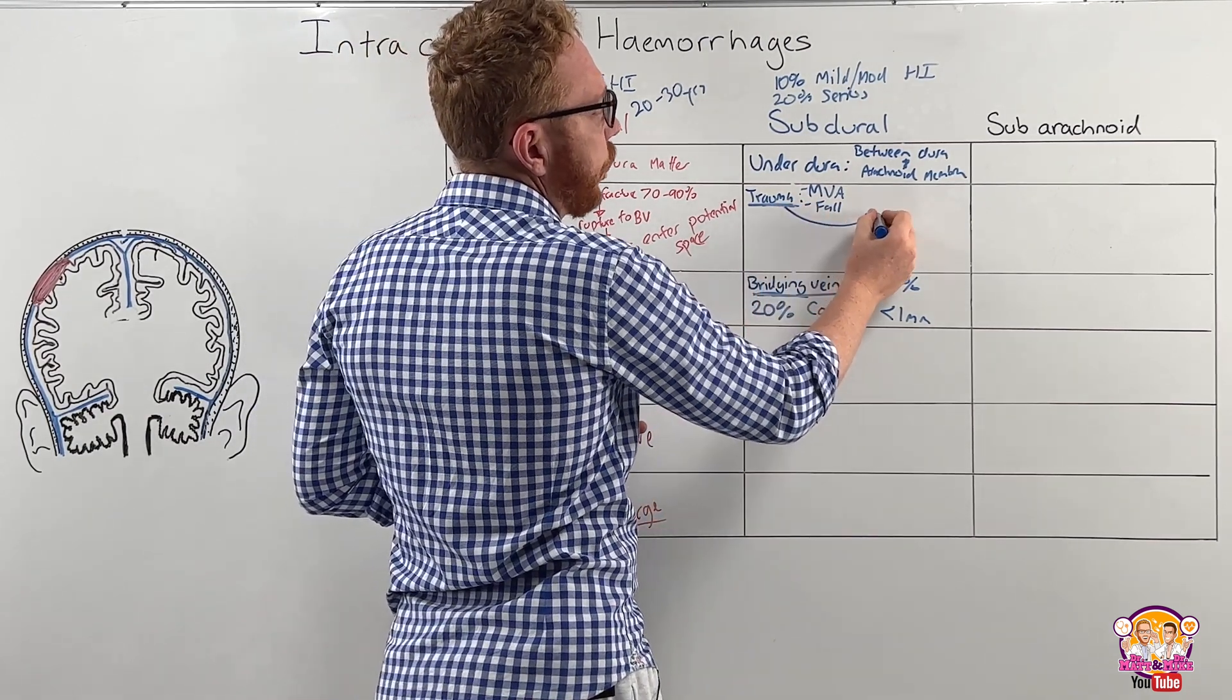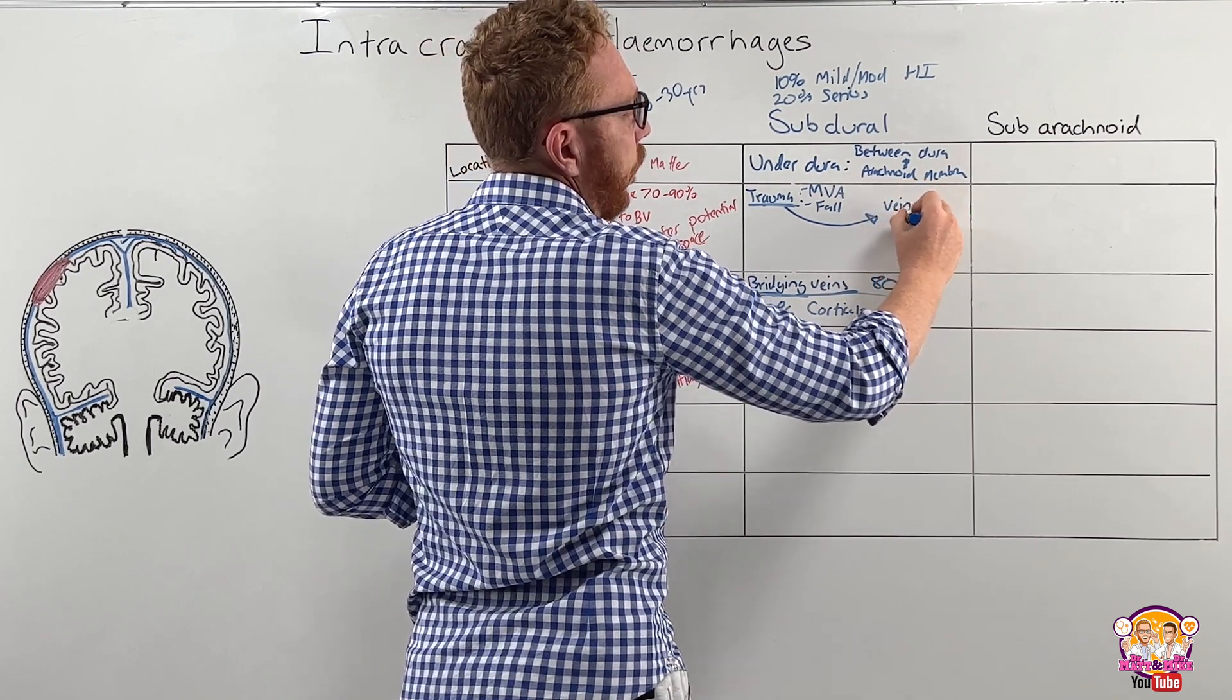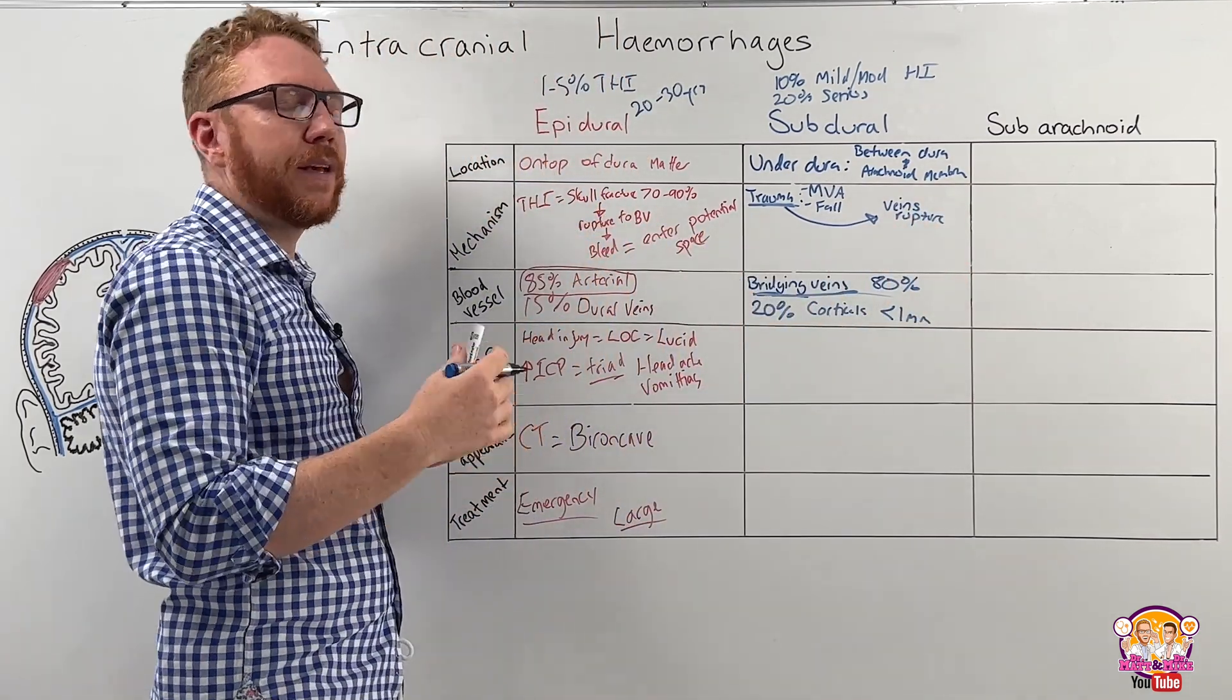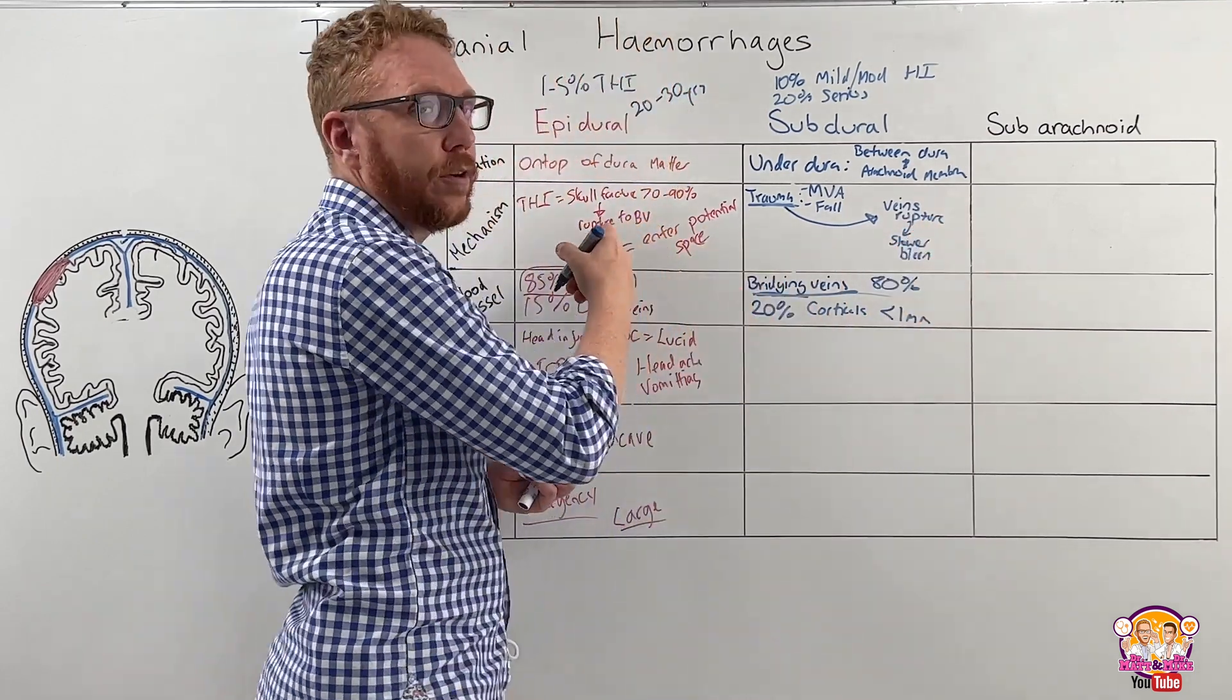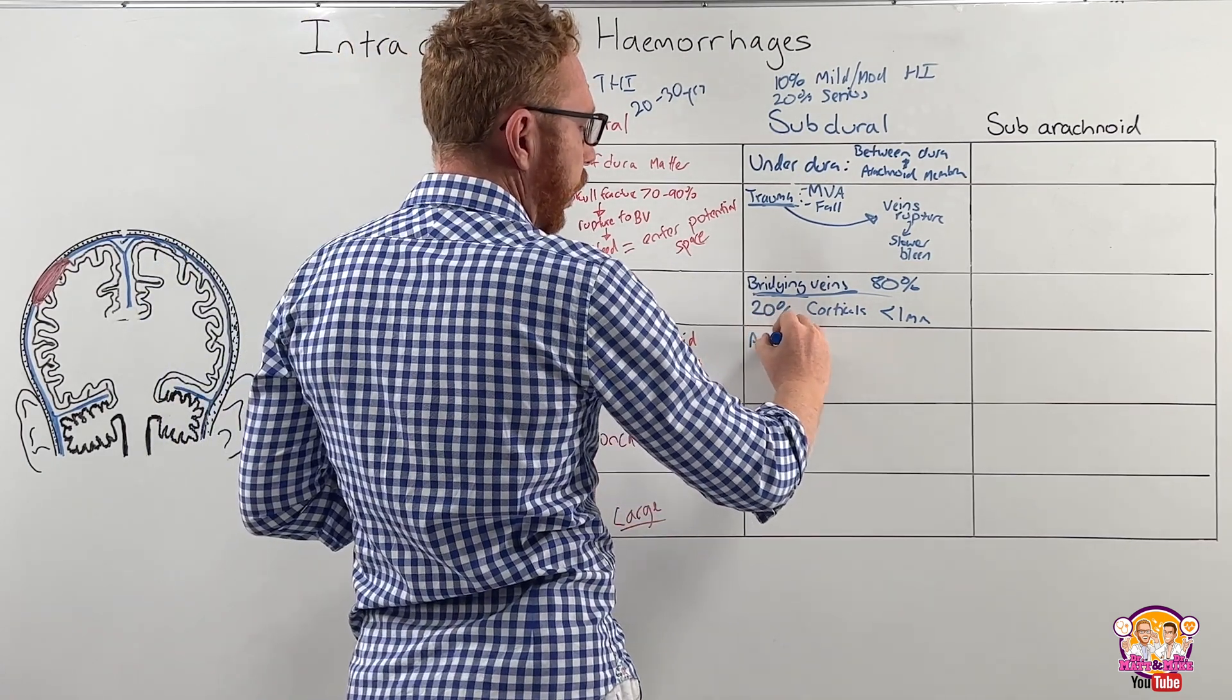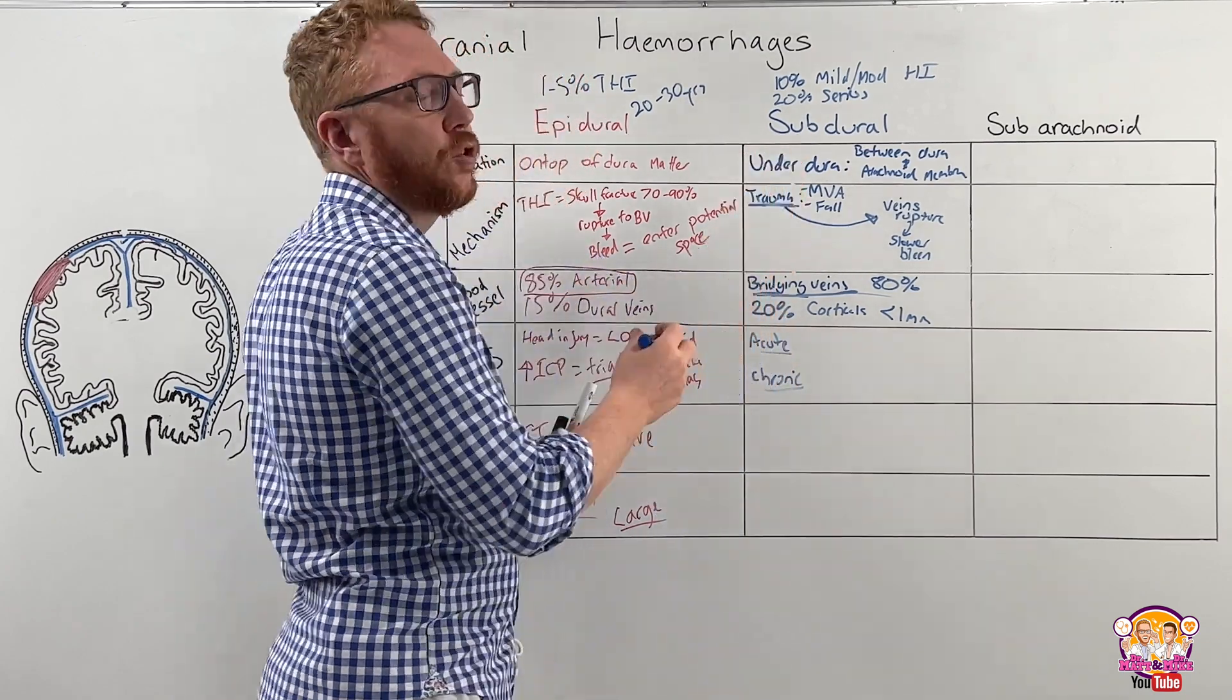So trauma is the most common type of mechanism. This then leads to the vein rupturing. Now, comparing this to the epidural, the veins rupturing is going to be a slower bleed. So it's a slower bleed than the arterial. And that's going to then result in an acute or possibly a chronic subdural hematoma.